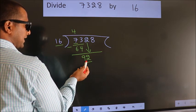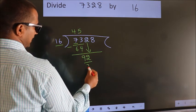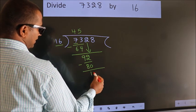A number close to 92 in the 16 table is 16 fives, 80. Now we subtract. We get 12.